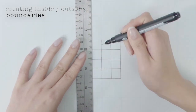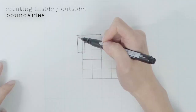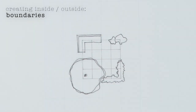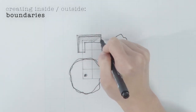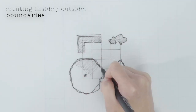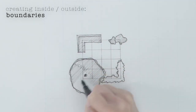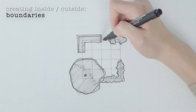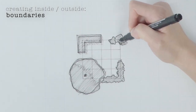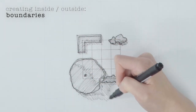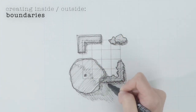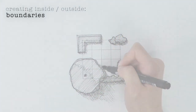Boundaries don't necessarily have to be defined with walls. You can define boundaries with landscape elements like bushes or benches or rocks. Like in this instance, we don't have any walls, but you can still see that the boundaries are pretty clearly defined and it really feels like its own enclosed space.